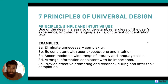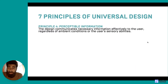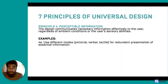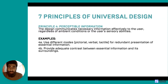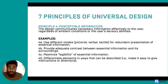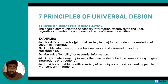The fourth principle is perceptible information. The design communicates necessary information effectively to the user regardless of ambient conditions or the user's sensory abilities. Examples include: use different modes — pictorial, verbal, tactile — for redundant presentation of essential information; provide adequate contrast between essential information and its surroundings; maximize legibility of essential information; differentiate elements in ways that can be described, making it easy to give instructions or directions; and provide compatibility with a variety of techniques or devices used by people with sensory limitations.